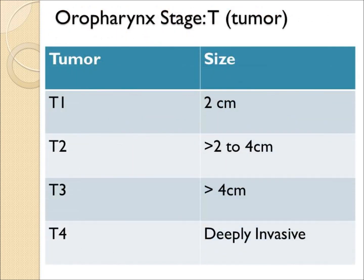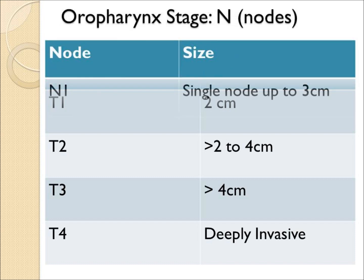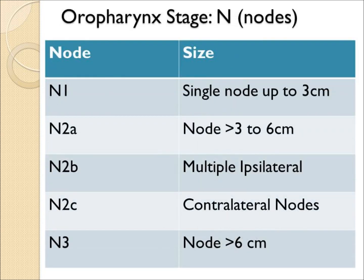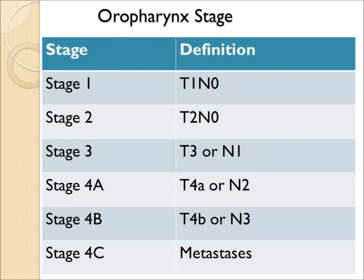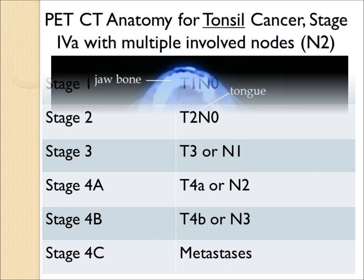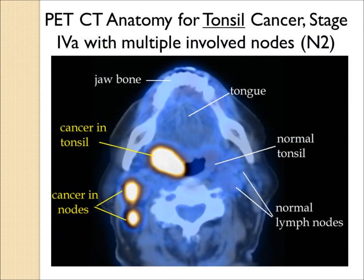The T is based on the size of the tumor, and the N is based on the number and size of the lymph nodes. These are combined to form stages. Note that there are three stage fours: 4A, B, and C. For example, a patient with tonsil cancer and two lymph nodes is classified as N2, making them stage 4A. This is still curable, however, despite being stage 4.